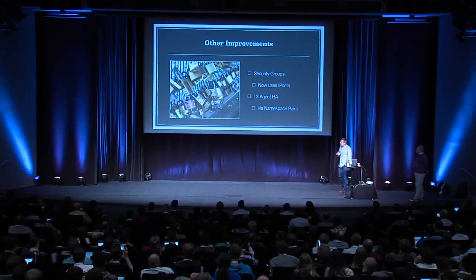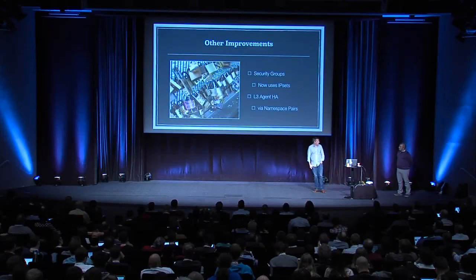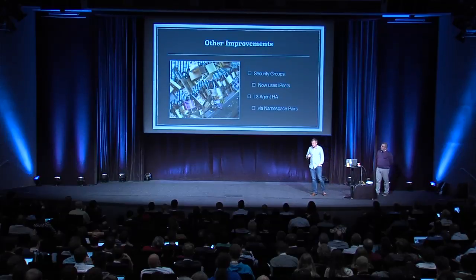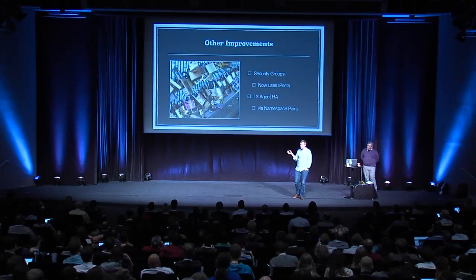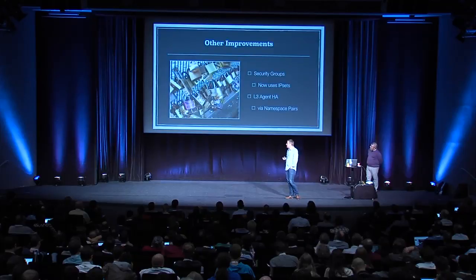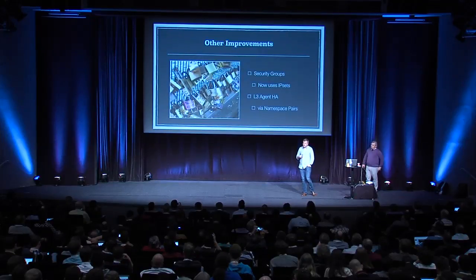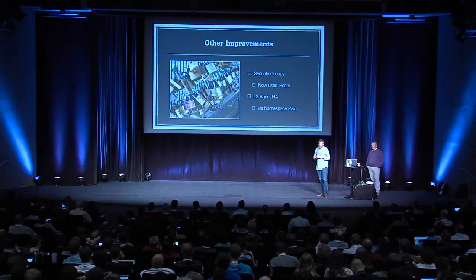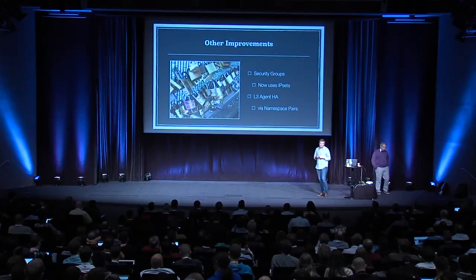Another improvement in Juno is we've improved security groups tremendously. One change is we started using IP sets. Like putting too many locks on a bridge until panels start falling off — if you put too many rules in IP tables, it becomes very slow and starts breaking down. With IP sets, we can speed up the ability to process security group rules by aggregating them. Lastly, we provided L3HA: now when you have a network node, you can run them in pairs. Using connection tracking we can share state, so if a network node dies, the other takes over and seamlessly transitions your traffic.